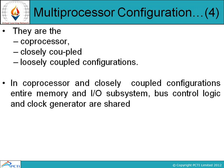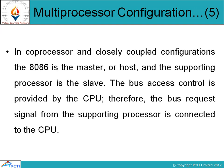In co-processor and closely coupled configurations, the entire memory and IO subsystem, bus control logic, and clock generator are shared between different devices and peripherals. In these configurations, the 8086 is the master or host and the supporting processor is the slave.